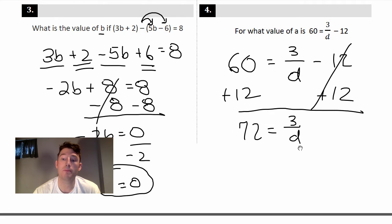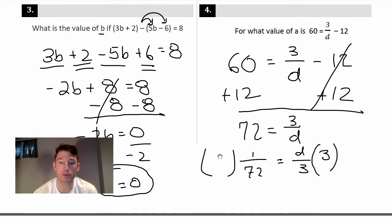What's our first step? Can we combine like terms? Not really. Can I add or subtract numbers away from the variable? Let's add 12, and 12 gone. So 72 = 3/d. So here's a nice little trick: if you've got a variable in the denominator, just flip it. But if you flip one side, you've got to flip the other.